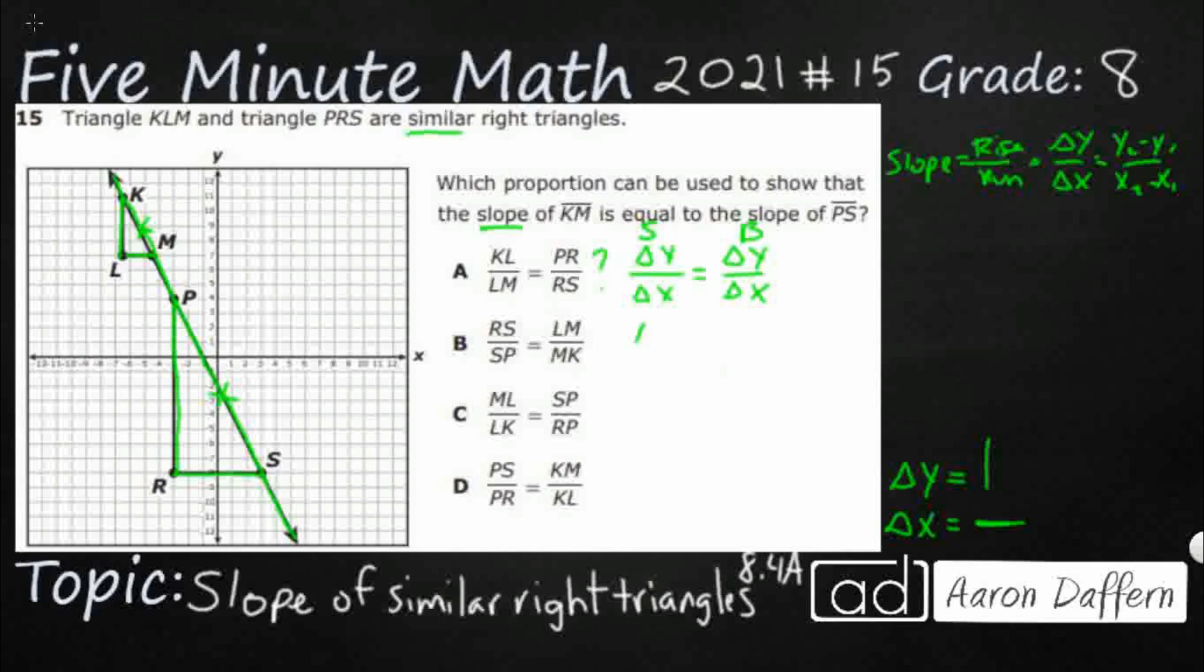RS, well look at that. That's already a problem. RS is horizontal. It's a change in X. I need my change in Y. That's how you show slope. And yeah, look at SP. That's just a hypotenuse. Okay. So we're just going to not look at B. That's not it.